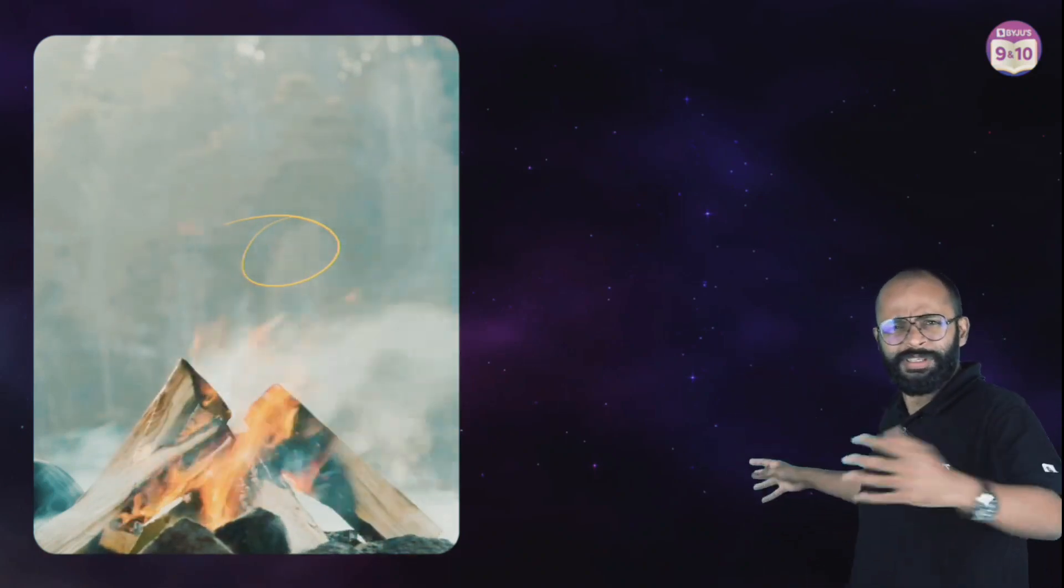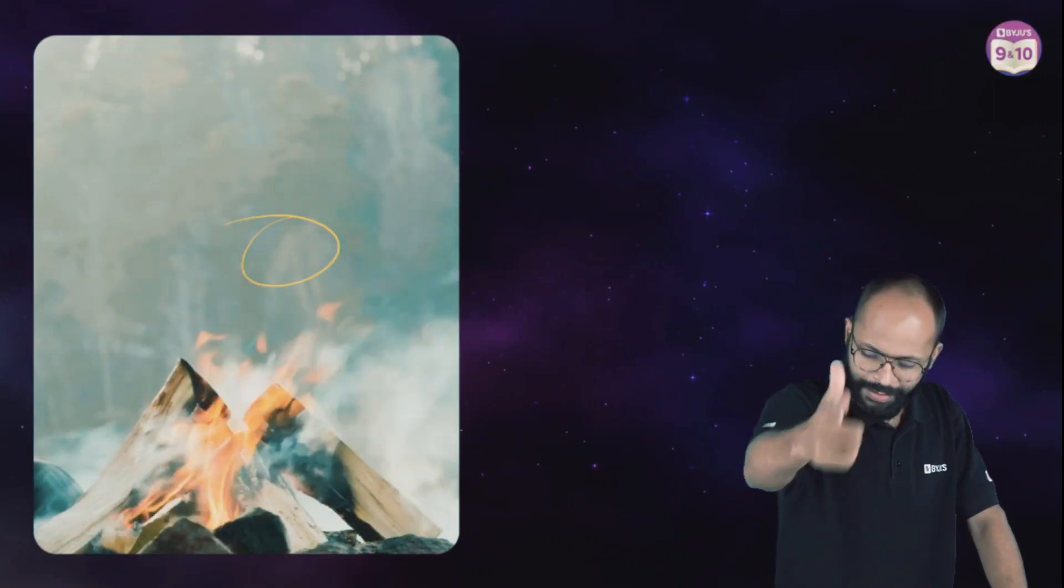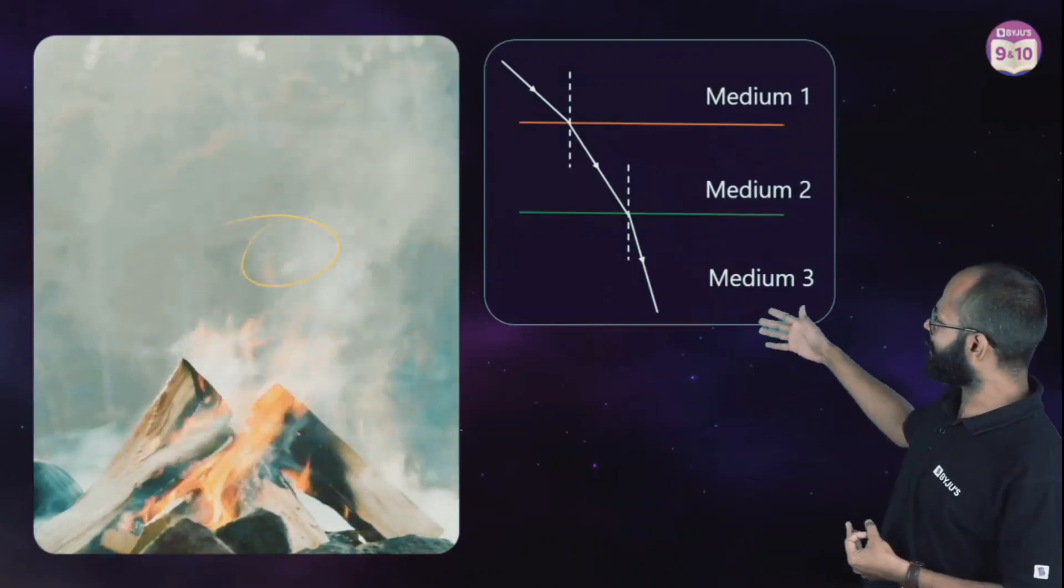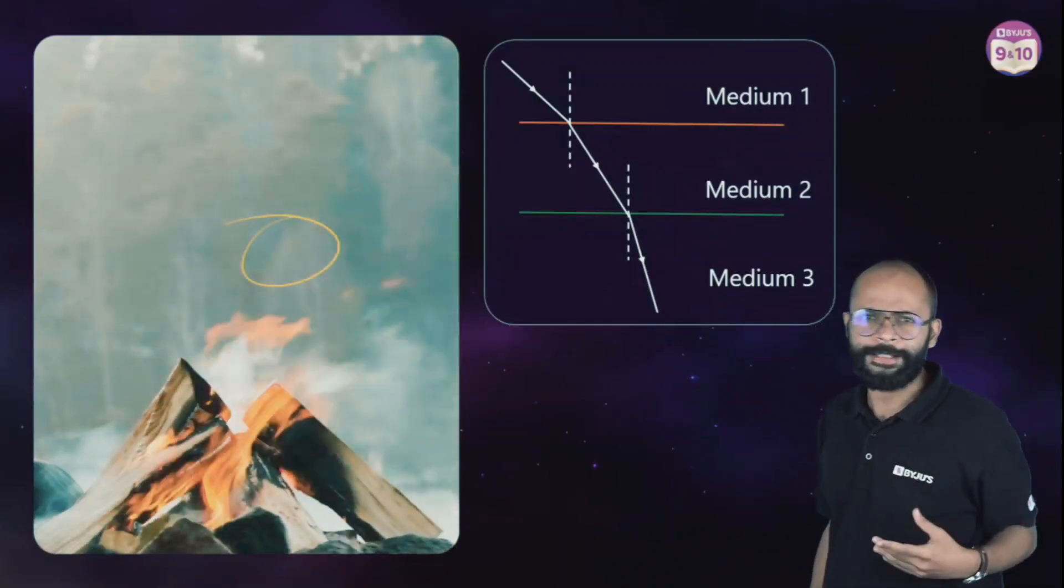In between, what is there? There is medium. Here there is this bonfire, which is hot gases moving up very quickly. There is so much disturbance in between. Medium one, medium two, medium three. When light travels from one medium to another and if both have different optical density, it bends.